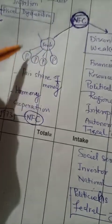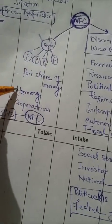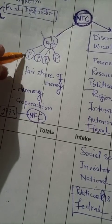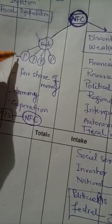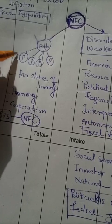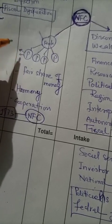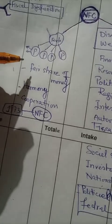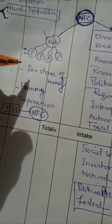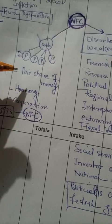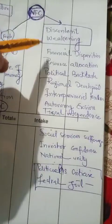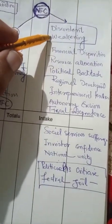The share of the budget is based on the income produced by each province and according to the population of that province. In this way, the budget is allocated to different provinces of Pakistan on that basis.